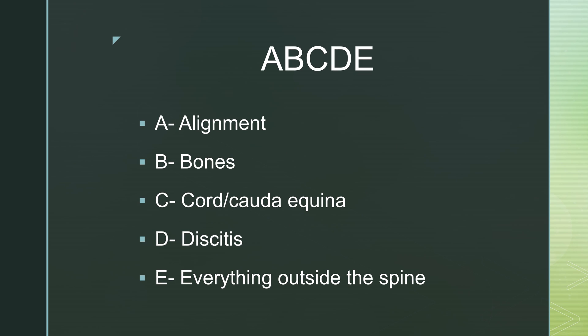The ABCDE stands for alignment, bones, cord/cauda equina, discs/discitis, and E is everything outside the spine.